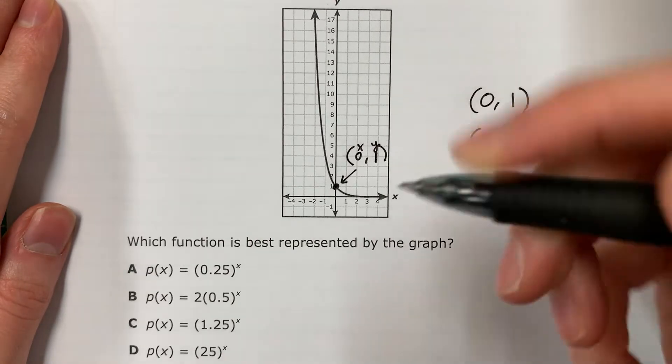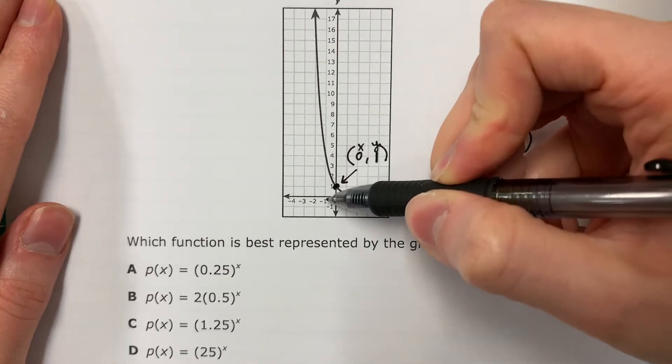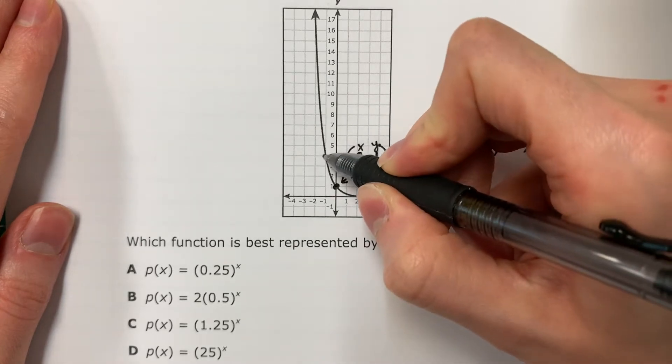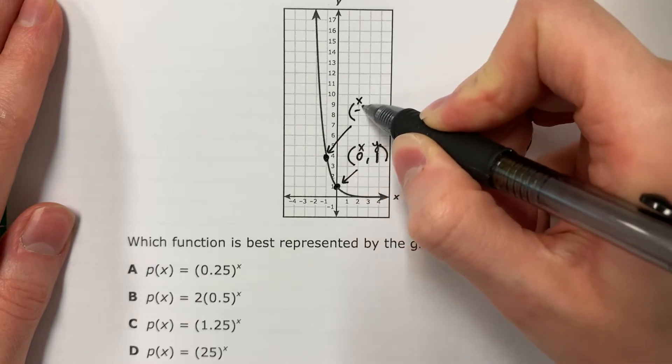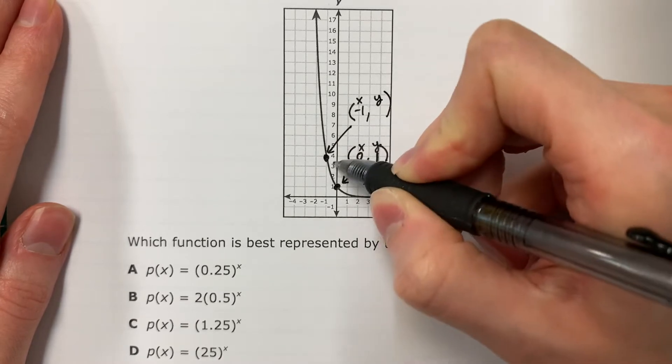And I need one more. It looks like I have negative one, four. X, negative one. Y, four.